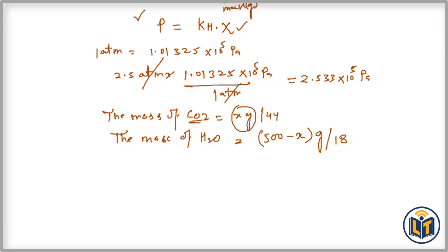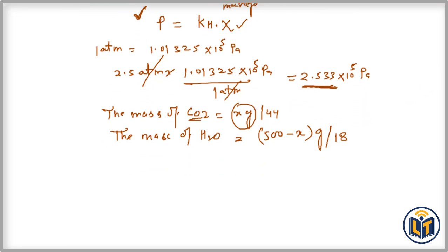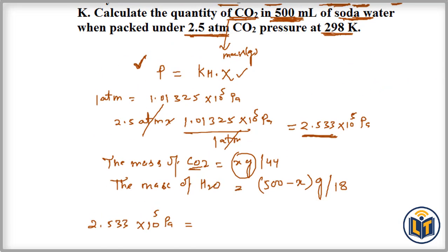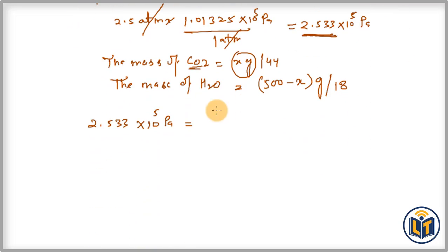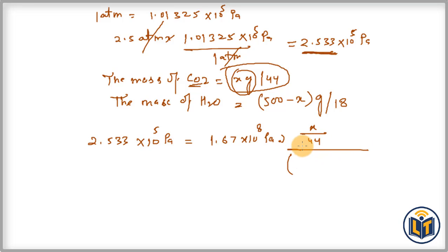Plugging into Henry's law formula: P = KH · x. We have 2.533 × 10⁵ Pa = 1.67 × 10⁸ Pa × [mole fraction]. The mole fraction is (x/44) divided by (x/44 + (500 − x)/18), where x/44 is moles of CO₂ and (500 − x)/18 is moles of water.